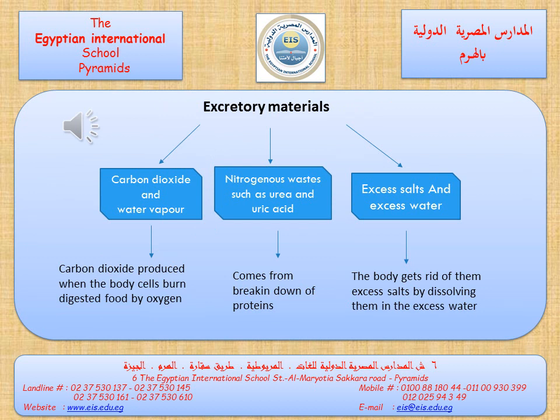Excretory materials are three types. The first one is carbon dioxide and water vapor, which are produced from the burning of digested food with oxygen. Number two is nitrogenous waste — examples include urea and uric acid. Nitrogenous waste is produced from the breaking down, or digestion, of proteins.